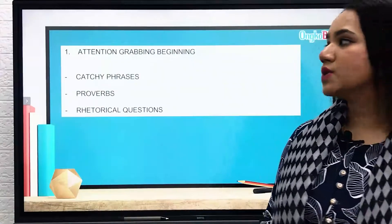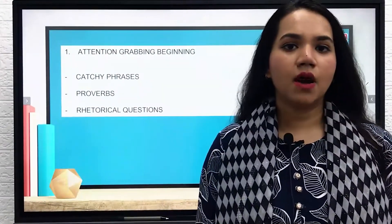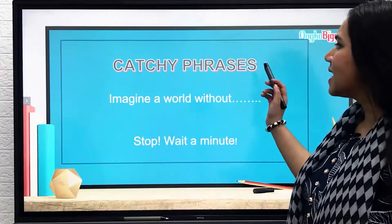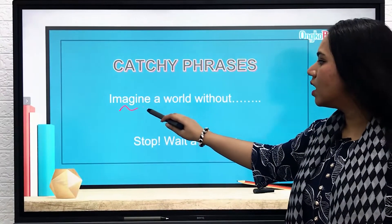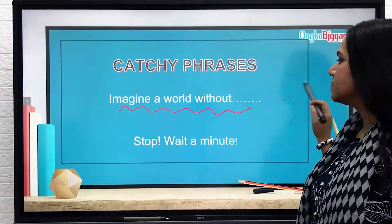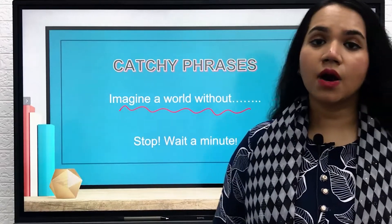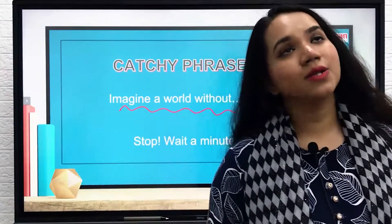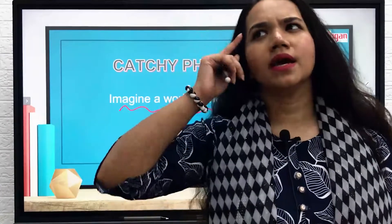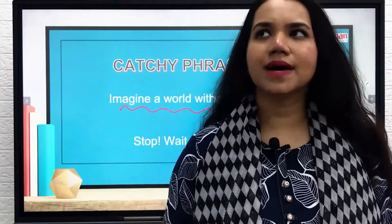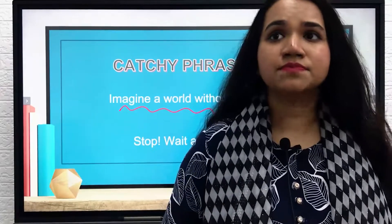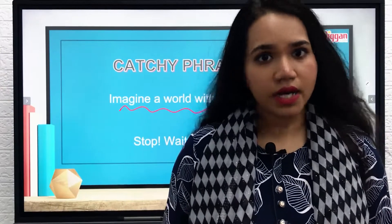This means that you can start off by using catchy phrases. For example, an essay on global warming can start off by saying 'imagine a world without any water,' because global warming is causing all of the water to dry off. This makes the reader think — how can I imagine a world without water? Because the human body contains 70% water, and water is essential. Without it, we can never live.